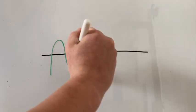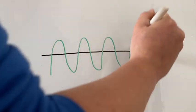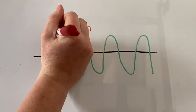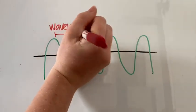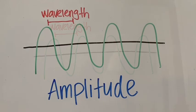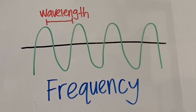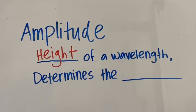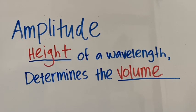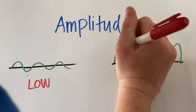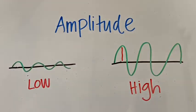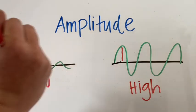If you were to draw sound, it would look like this. A wavelength is the distance between two sequential peaks. These are measured in terms of amplitude and frequency. Amplitude is the height of a wavelength, and this determines the volume of the sound. The taller the wavelength, the louder the sound. The shorter the wavelength, the quieter the sound.